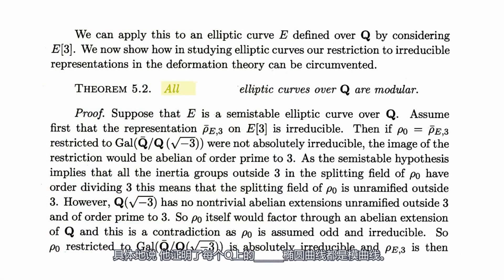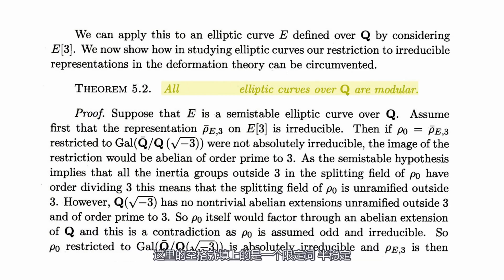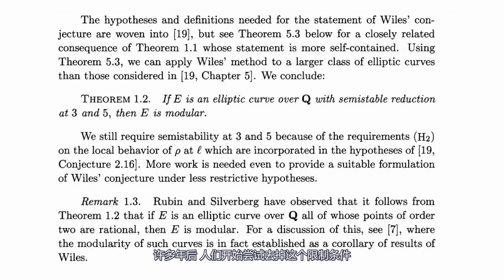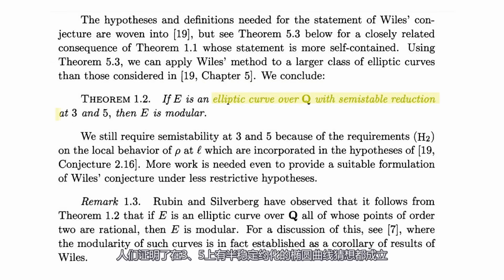Specifically, he proved the following statement: every semi-stable elliptic curve over Q is modular. It was known that this statement was enough to prove that Fermat's Last Theorem was true. Slowly, in the years after, people started removing conditions on the theorem. So the Taniyama-Shimura conjecture was then proven for all curves that were semi-stable at two and three.